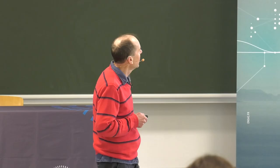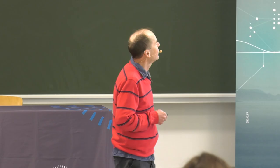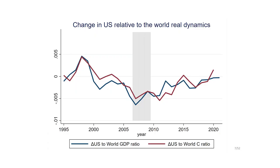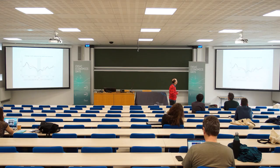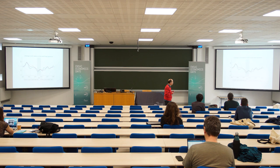The final empirical fact, focusing on the GFC, is a fall in US relative to world GDP and US relative to world consumption. The exorbitant duty — the transfer of wealth — is associated with a fall in real activity and real consumption in the US relative to the rest of the world. These are the empirical facts we want to focus on for our modeling.